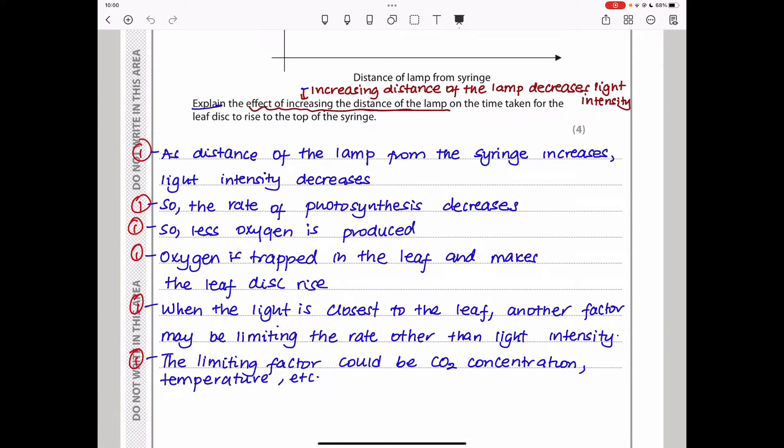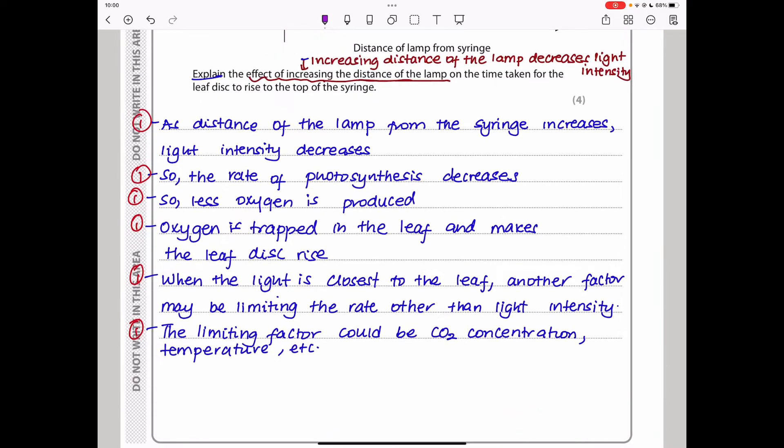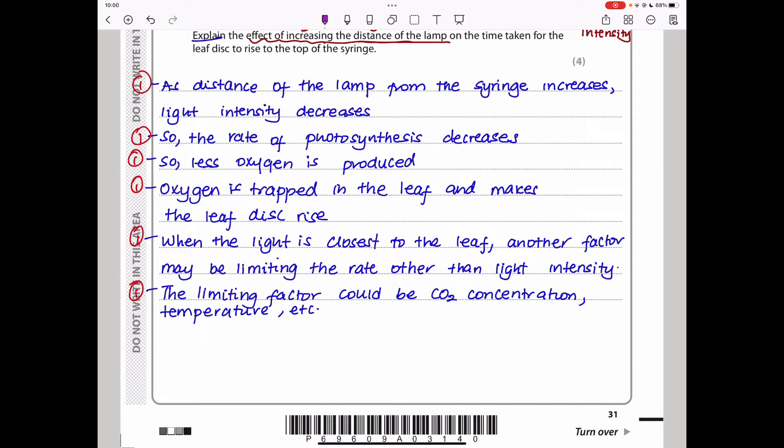When the light is closest to the leaf, another factor may be limiting the rate other than light intensity. The limiting factor could be carbon dioxide concentration or temperature. As the distance is shorter, closest to the leaf, we do not see zero time taken. We see there is some time it's taken. This could be due to another factor. If there was no limitation at all, maybe we expect it to go like that. But because there is some other factor that could limit, that's why we see the curve starts from here and it goes like that.